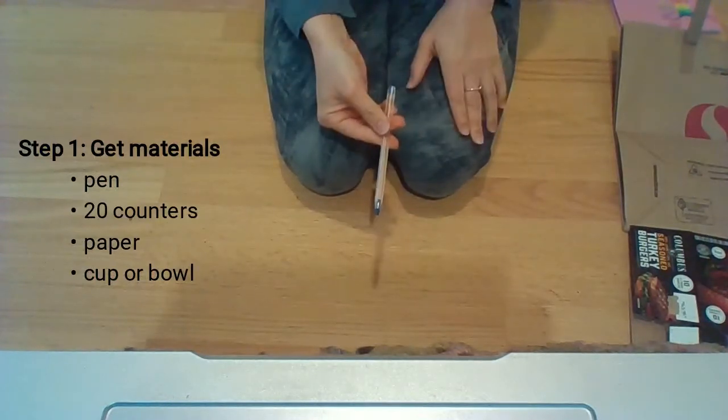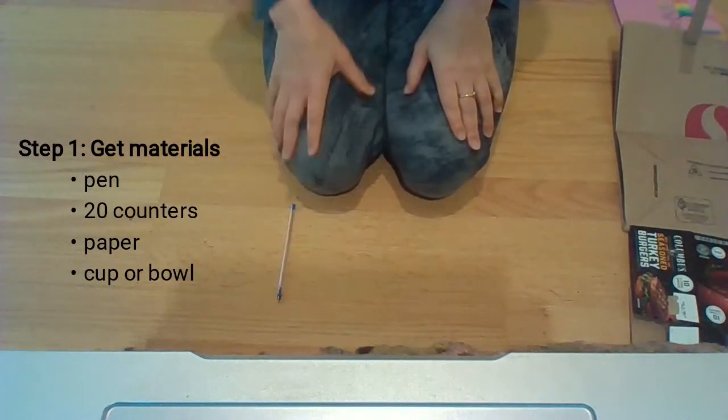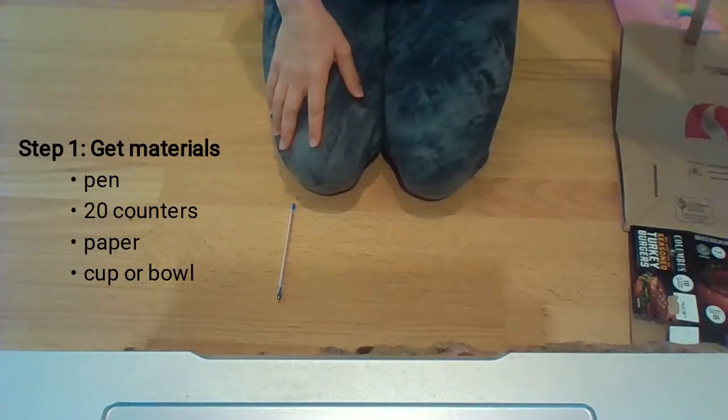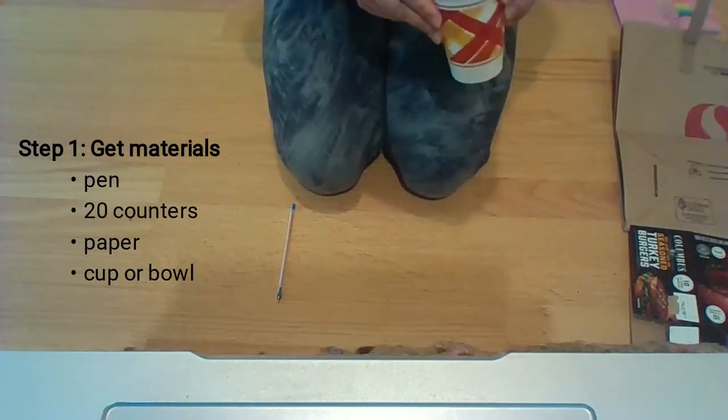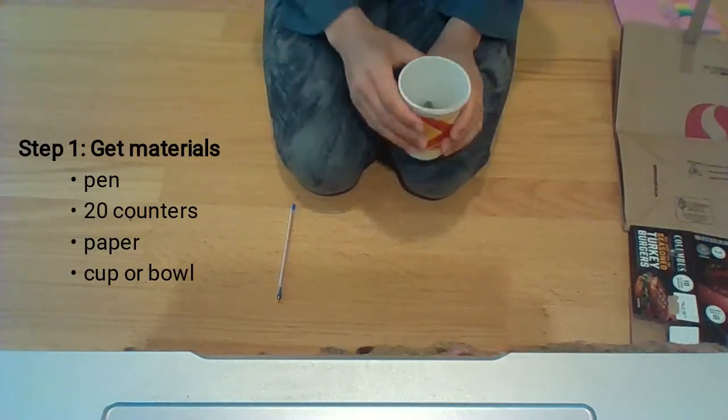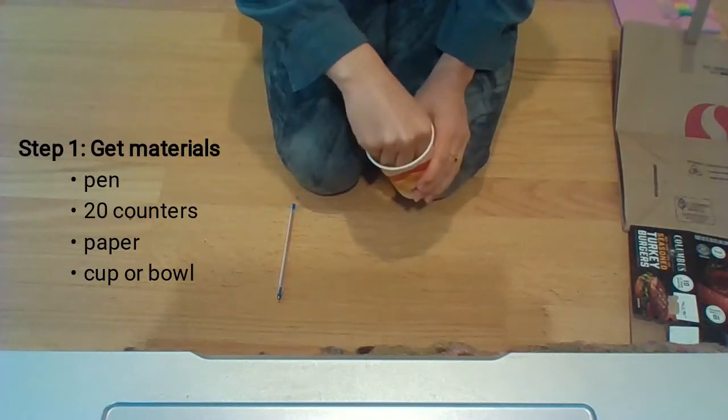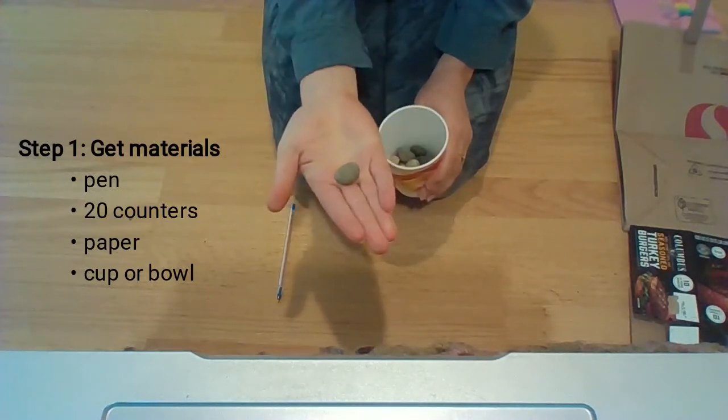The first thing you're going to need is something to write with, so I got a pen. You're also going to need to use something as counters, so think about some of the counting collections you've done. You need about 20 things to mark your spots on the bingo. I got some rocks from outside my house. I have about 20 and they're small.